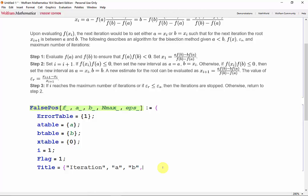And we'll make our titles with the iteration number a, b, xi this time, f(a), f(b), f(x_i), and the error.